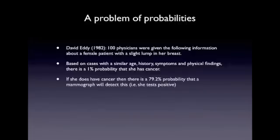Also, if she does have cancer, then there is a 79.2% probability that a mammograph will detect this. In other words, she tests positive, where positive is not good. That means that there is a chance that this cancer is present. But notice, of course, that this also implies that there will be some people who do have cancer, but where the mammograph fails to detect this.